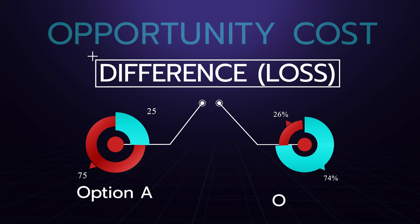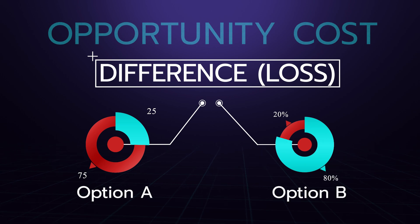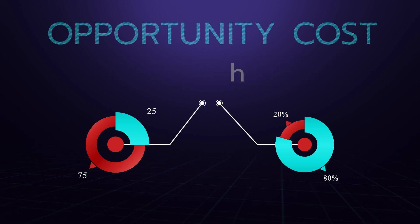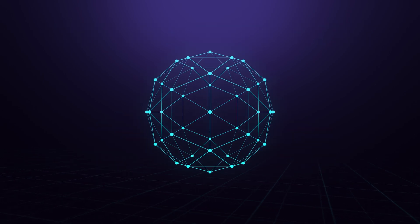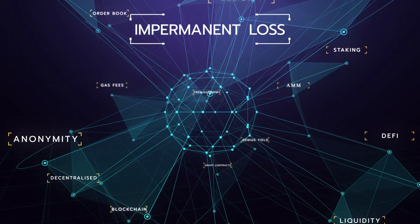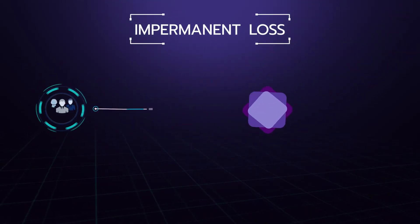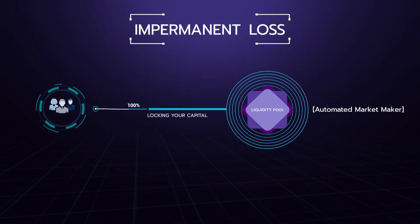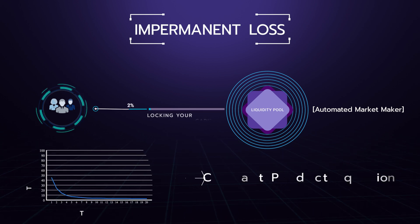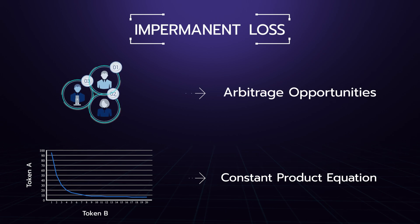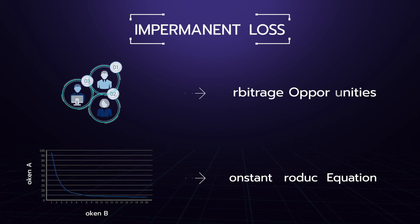In DeFi, impermanent loss has come to be the common definition to describe the opportunity cost of locking your capital in a typical AMM — automated market maker — liquidity pool using a constant product equation, which is subject to arbitrage opportunities versus the value of simply holding the assets in your wallet.